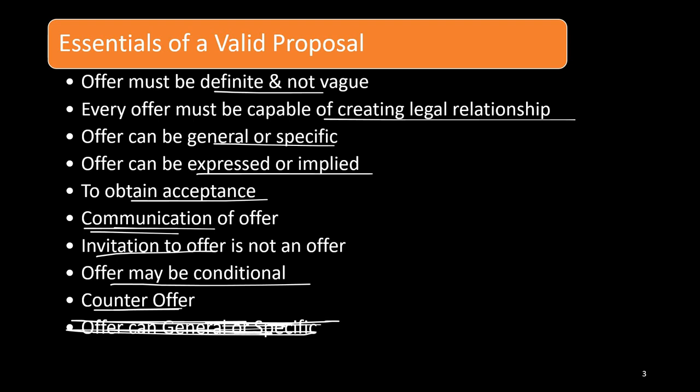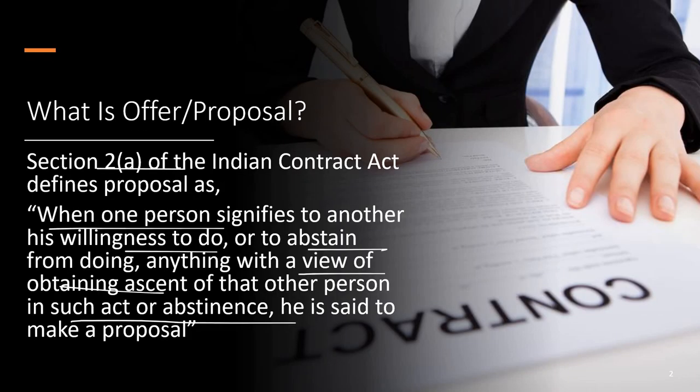The next condition: every offer must be capable of creating a legal relationship. If I say I want to buy your car, there is an intention to create a legal relationship — buying or selling a car is legal, so it creates an obligation. Offer can also be general or specific — you can make it to a specific person or to the general public. There is no restriction that an offer must be made to a specific person only.